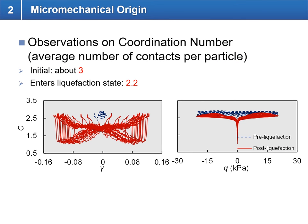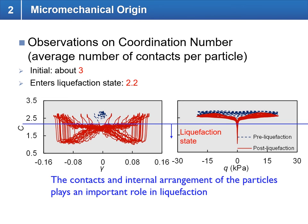On the micro-mechanical side, we first look at coordination number, which is the average number of contacts per particle. In our 2D DEM simulations, prior to loading the initial coordination number is about three. As undrained cyclic loading progresses we see a progressive decrease in coordination number, and as it decreases further below a value of approximately 2.2, we observe that soil enters into the liquefaction state. This means that the contacts and internal arrangement of particles — or more specifically the lack of contacts — plays an important role in liquefaction.